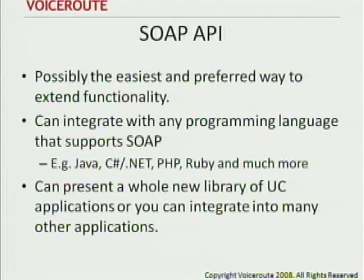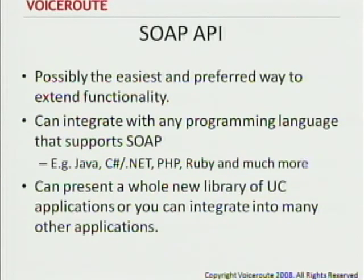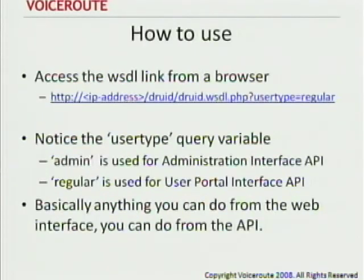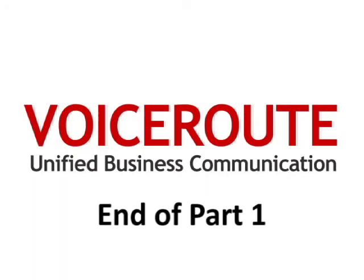Now I'm going to get into the SOAP API. The SOAP API is probably the easiest and preferred way to extend functionality. You can basically integrate Druid with any programming language that uses SOAP — Java, C#, .NET, Ruby, anything like that. You get a whole library of applications that you can give to your users. I can access this WSDL link in the browser. Notice this user type element — I'll access the SOAP API quickly.